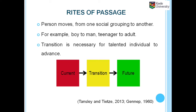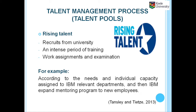Rites of passage originated from Van Gennep's 1960 studies of social groups, examining how a person moves from one social group to another — for example, from a teenager to an adult. Rites of passage convey the successful transition through the talent management process run by organizations, and this transition is necessary for talented individuals to advance. Talent management projects capture talent not only at the individual level but also at the collective level, as supported by Michaels 2010. Within the collective purpose in talent management, talent is given identity labels set by the organization such as 'rising star,' 'emerging talent,' and 'next generation leader.' Talent therefore has the opportunity to transfer and advance if they make a successful transition to the next stage.